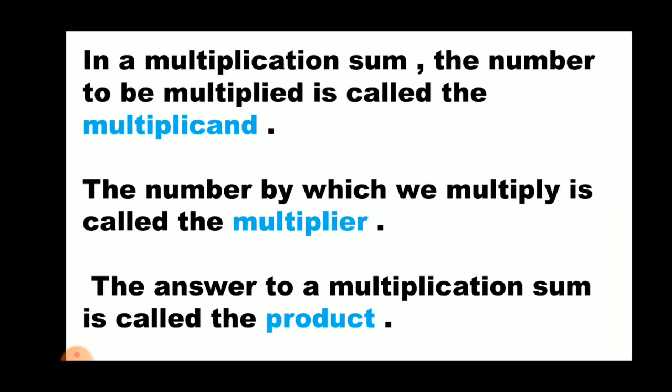What is multiplier? The number by which we multiply is called the multiplier, that is 6. The answer to the multiplication sum is called the product.